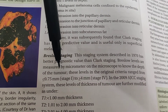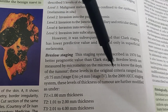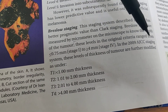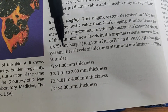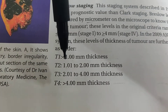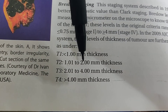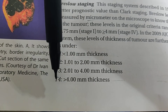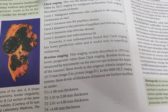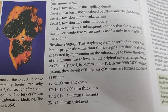Breslow staging is based on the thickness measured in millimeters under the microscope. The levels range from less than 0.75 mm at stage one to greater than 4 mm. As seen here: T1 is less than 1 mm thickness, T2 is 1 to 2 mm, T3 is 2 to 4 mm, and T4 is greater than 4 mm. When invasion depth or thickness is greater, the prognosis is worse.